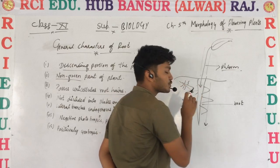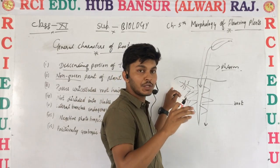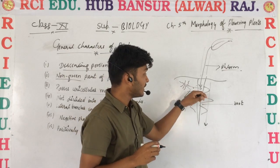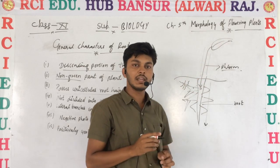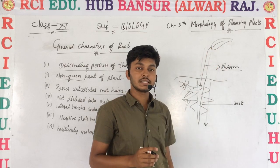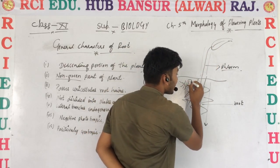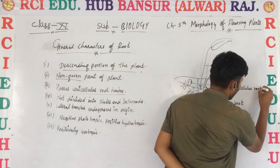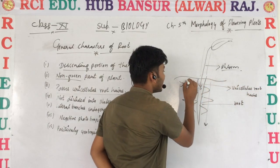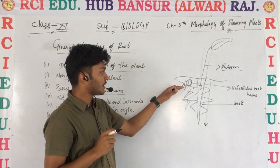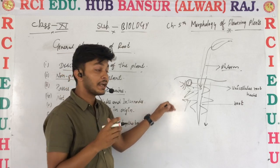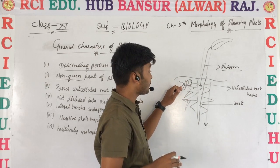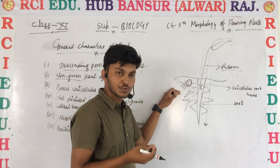The main function of root hairs is to absorb water and minerals from the soil. The absorbed water is then transferred through the central part of the root up to the leaves. Root hair structures are unicellular — they are made up of single cells. Their main function is absorbing water and minerals, and they increase the surface area of the root.